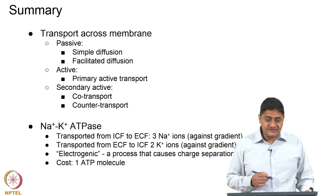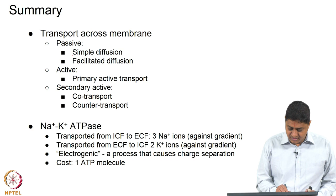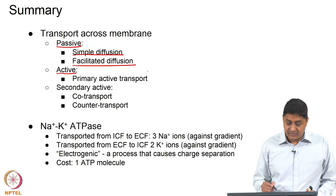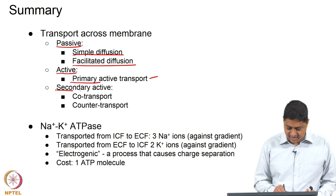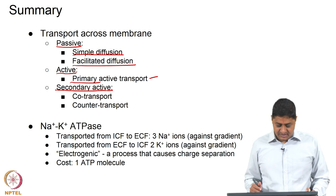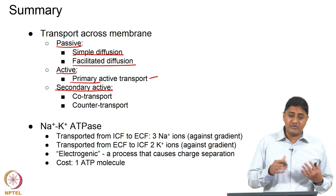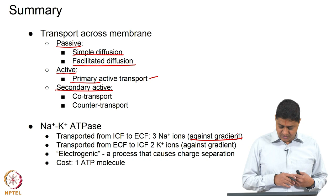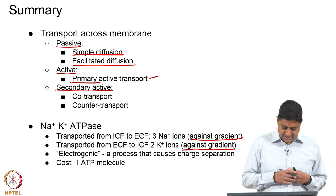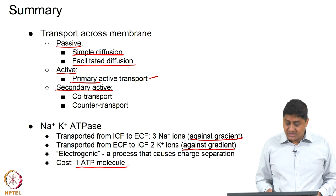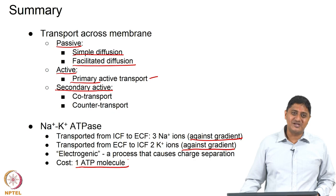In summary, today's class covered that transport involves simple diffusion and facilitated diffusion - together called passive processes - and active processes, of which there are two types: primary active transport and secondary active transport. An example of primary active transport is the sodium-potassium pump or sodium-potassium ATPase, in which 3 sodium ions go from inside to outside against the gradient and 2 potassium ions go from outside to inside against the gradient. This causes charge separation making the cell a little less positive, at the cost of one ATP molecule. With this we come to the end of the lecture. Thank you very much.